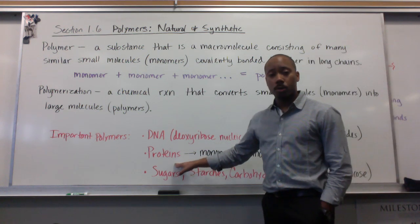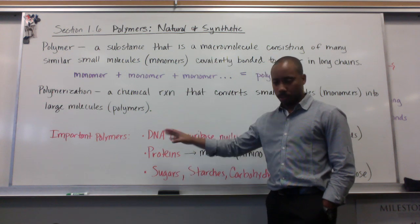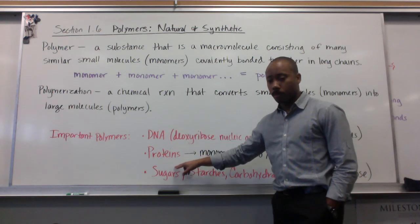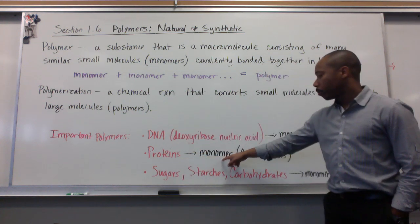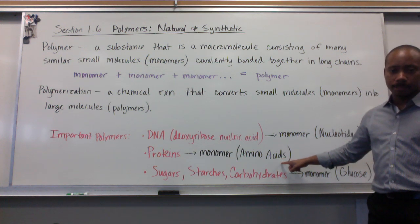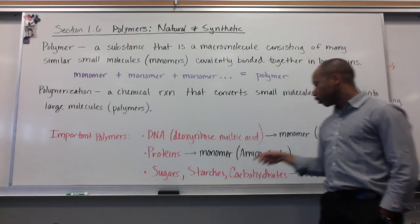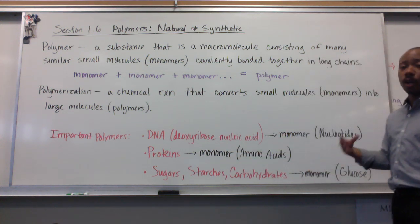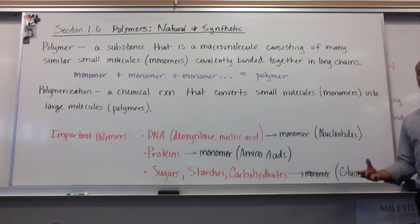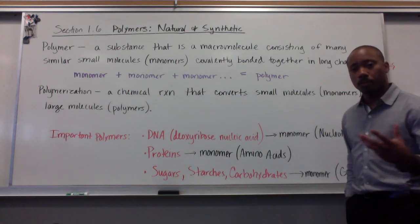Proteins are also polymers. The monomers for proteins are called amino acids. Sugars, starches, and carbohydrates are also polymers. The monomers for those are glucose.